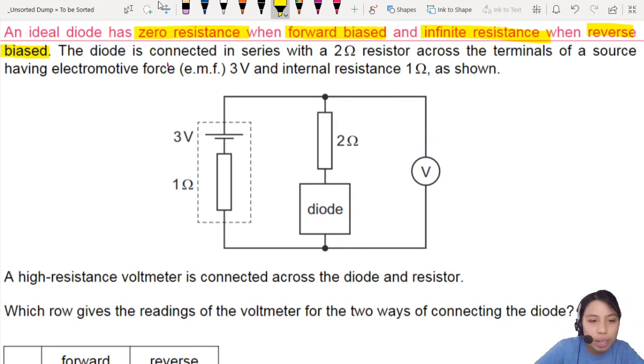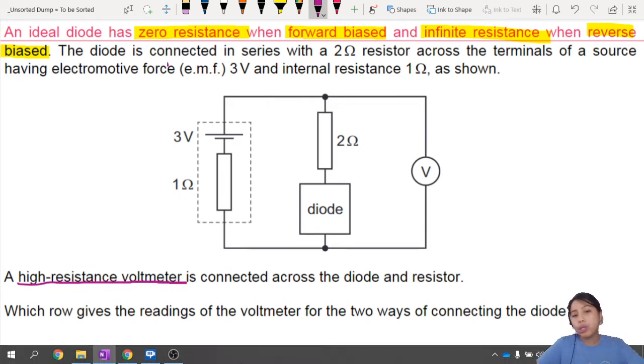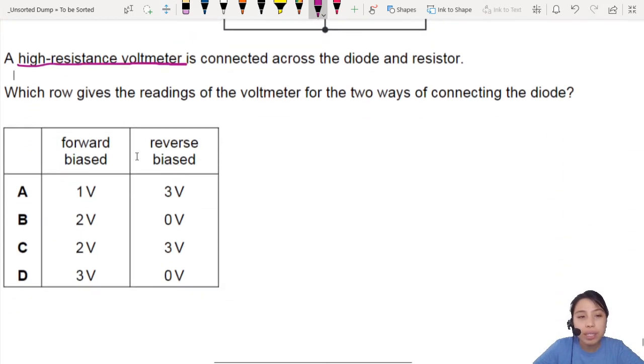So connected in a circuit as shown, a high resistance voltmeter on the right side is connected across diode and resistor, which two rows give the reading of the voltmeter correctly.